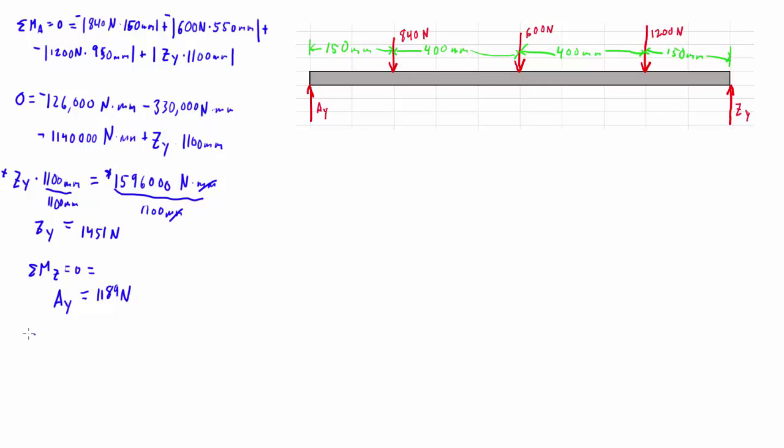Now we should always check, so we add up the forces in the y direction, and if you take AY and ZY, you'll end up with 2640 Newtons. Then if you add these up, you'll see you get 2640 Newtons down. So these two are up, those two are down, adding up the forces to be 0. They check out.